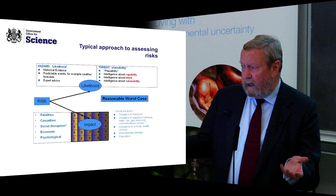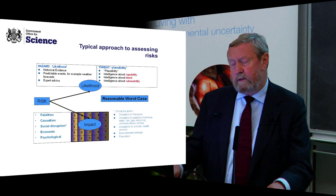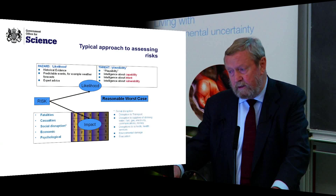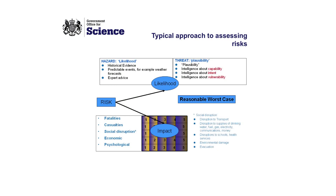How do we assess these risks? Risks are of different sorts. The ones I'm going to talk about are the risks that come from natural hazards — we have information from historical evidence, weather forecasts give you predictable events, and we have expert advice. In the world of counter-terrorism, we think about plausibility, intelligence about capability, intent, and vulnerability. Our national risk assessment is essentially divided into hazards from natural events and threats from terrorist-associated groups, and also the potential of state intervention.